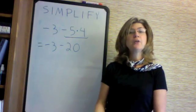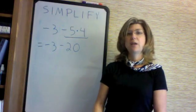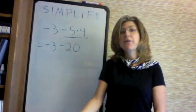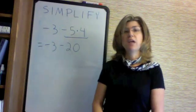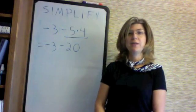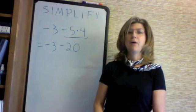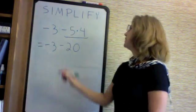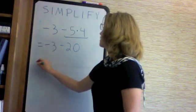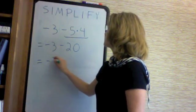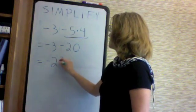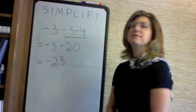Next we evaluate minus 3 minus 20. If I owe 3 dollars and I borrow another 20 dollars, how much will I owe? I will owe 23, or minus 23. And that is the answer.